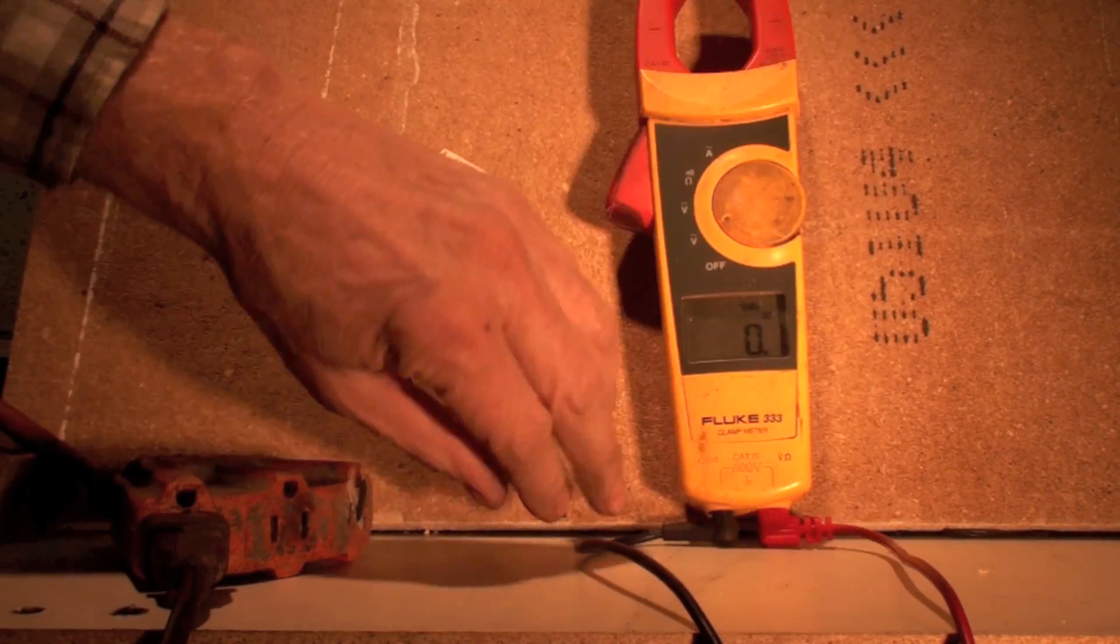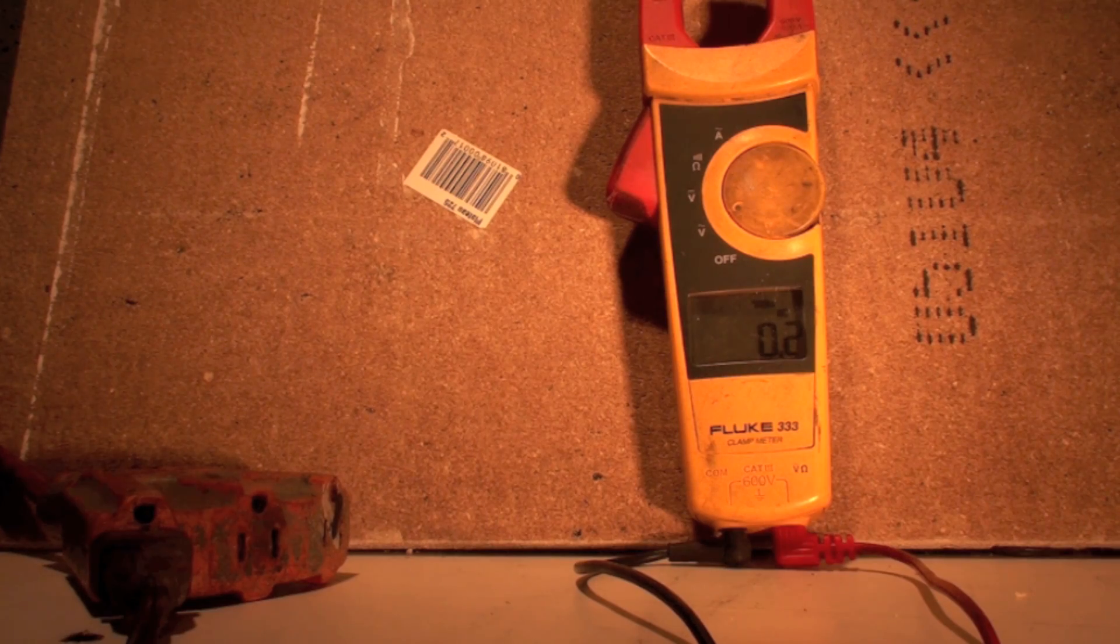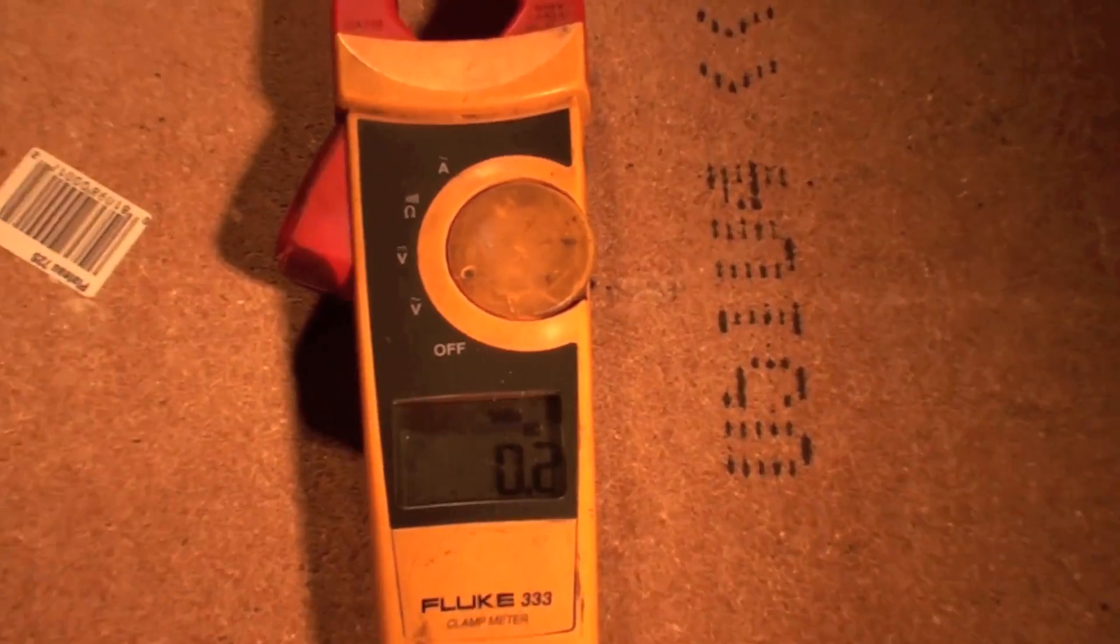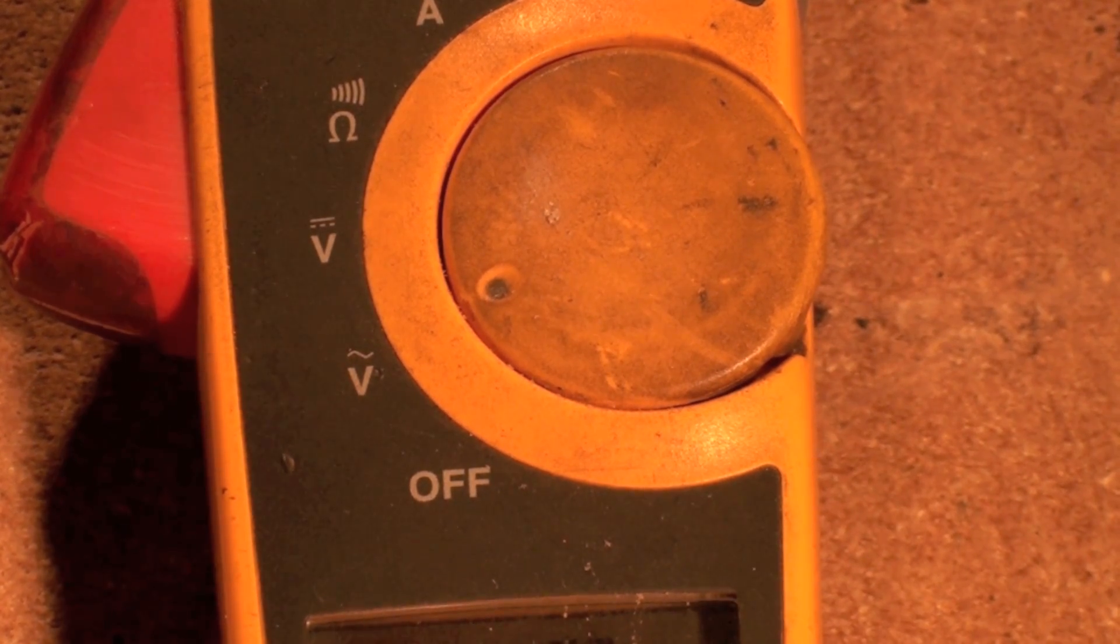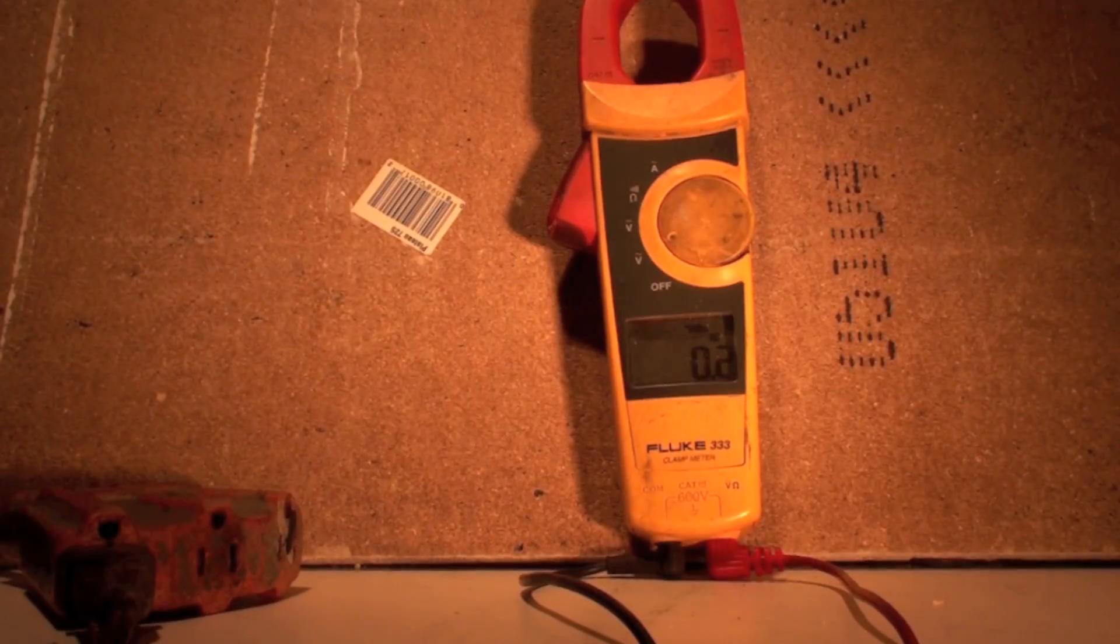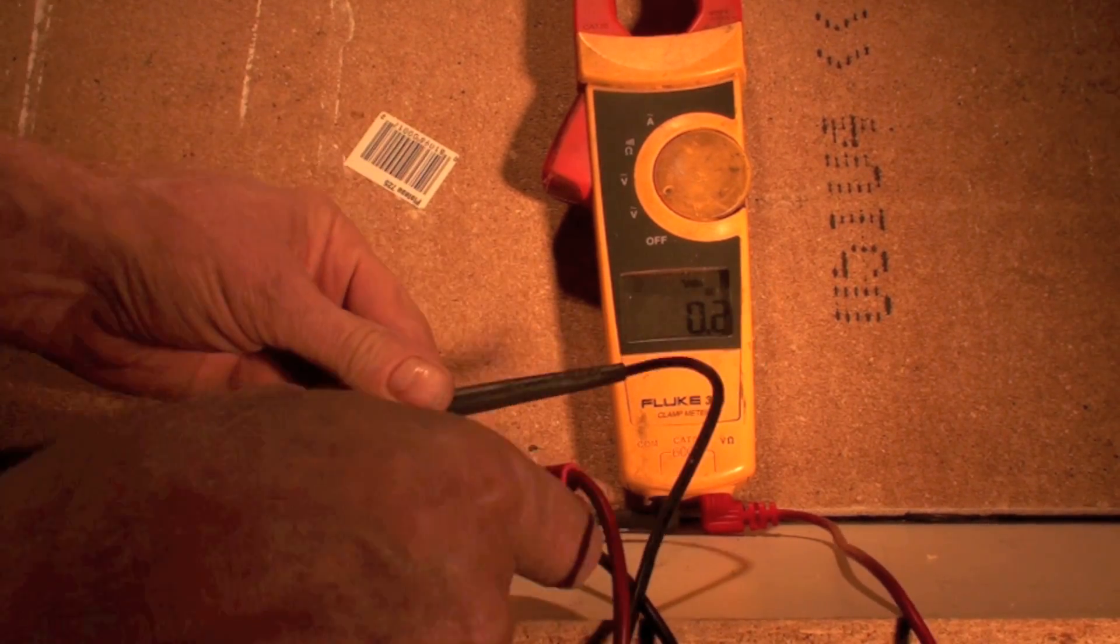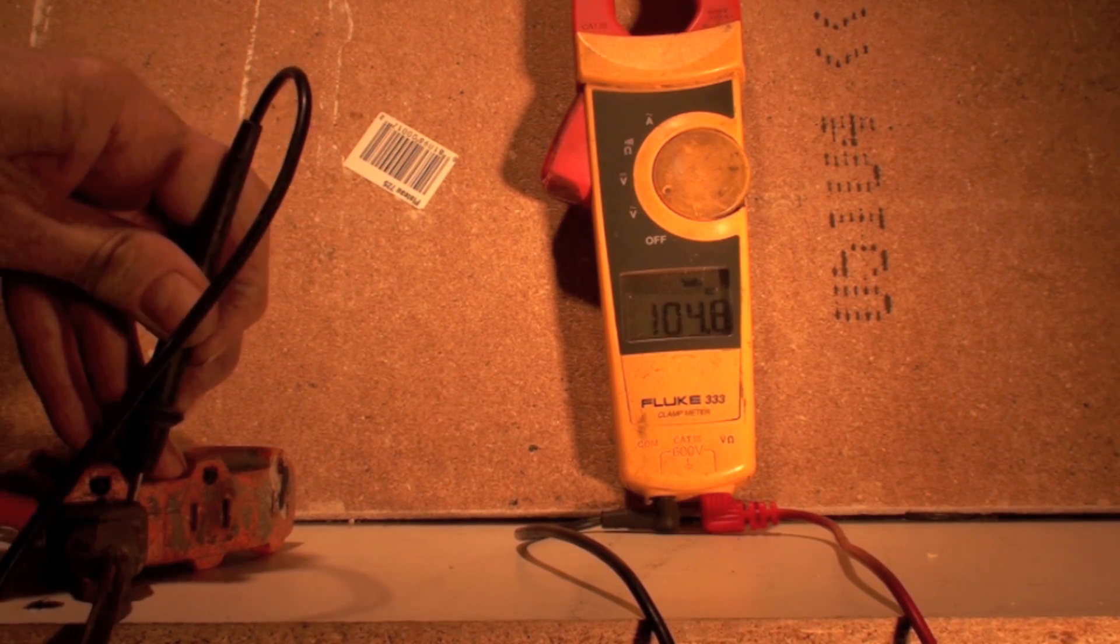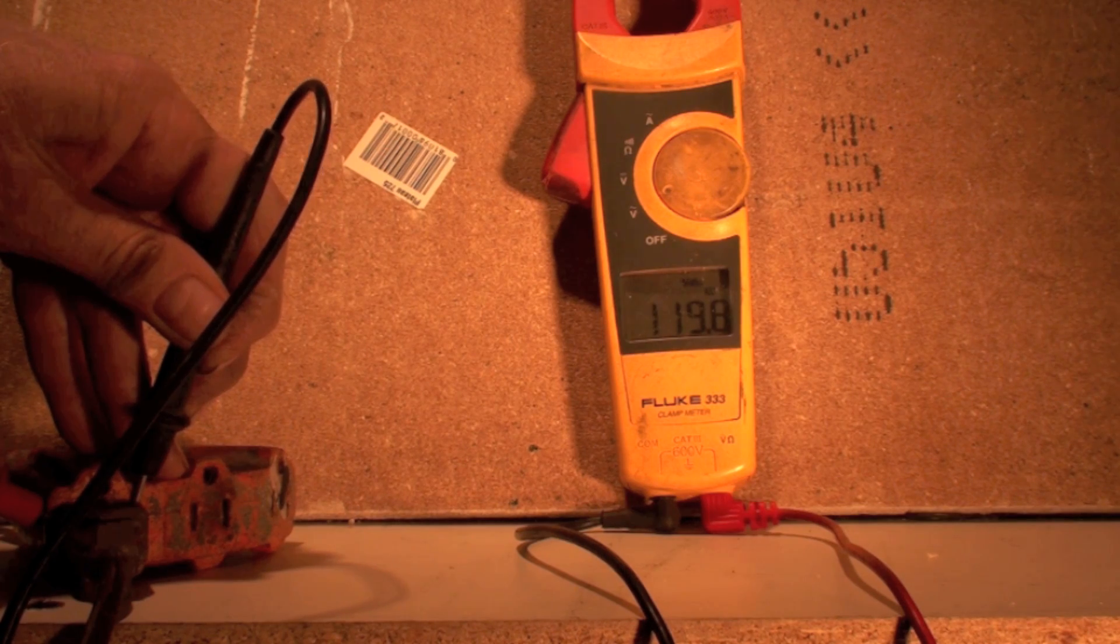We're going to run this thing down and put it in volts. Now we put this thing down into AC volts. Again, I'm going to make sure where it's at. You can see we're in AC volts now, we're set up to check volts. So I'm going to put my probes across this plug, and I know I have voltage on. Now I've got 119.8 volts AC.